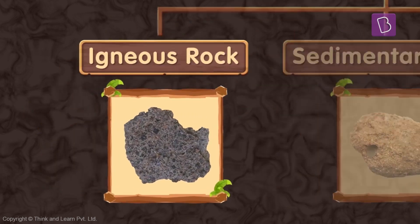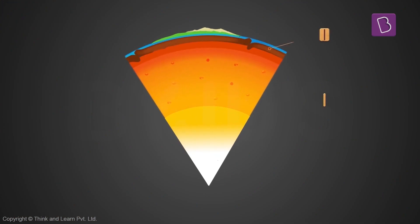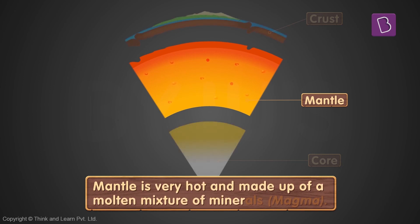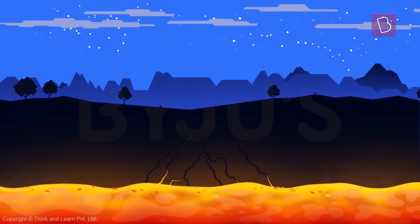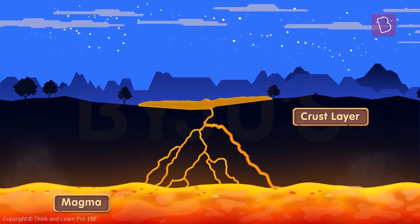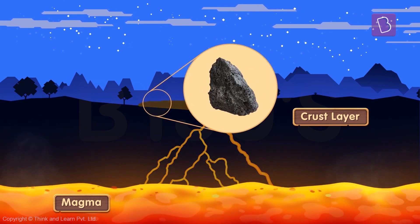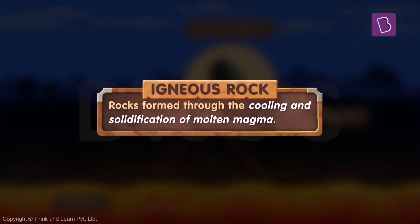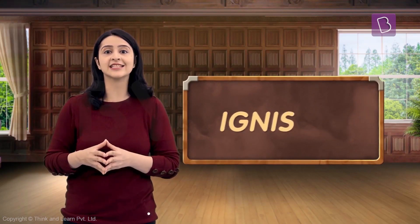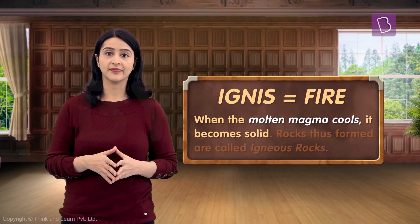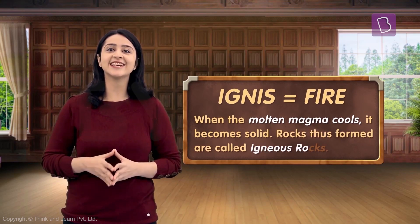Let's understand the first type: igneous rock. We know that the earth is divided into three layers, and the middle layer, the mantle, is very hot and made up of a molten mixture of minerals. This mixture is called magma. When this magma finds a way through the mantle and comes to the crust layer, it cools down and solidifies. The solidified magma becomes a rock — this rock is called igneous rock. The word igneous comes from the Latin word 'ignis', which means fire.